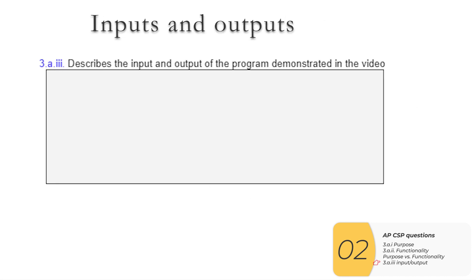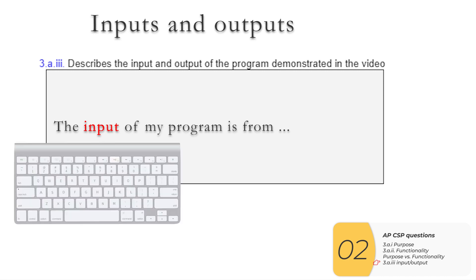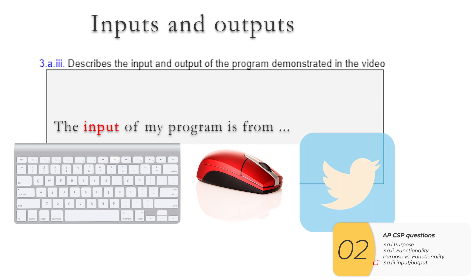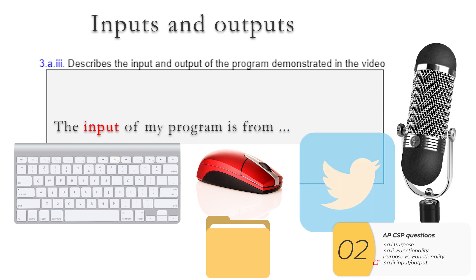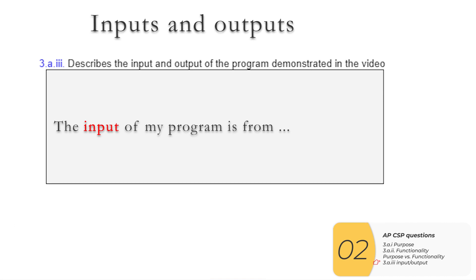The last question from this set I think is the easiest to answer. All you have to do is say 'The input of my program is from' — maybe it's a keyboard, maybe it's from the mouse (click or movements), maybe it's from an online data source like Twitter, maybe it's from a file, maybe it's from a microphone. Saying 'The input of my program is from' makes it clear to you that you've answered the question, and gives the grader a clear spot to look for your answer.